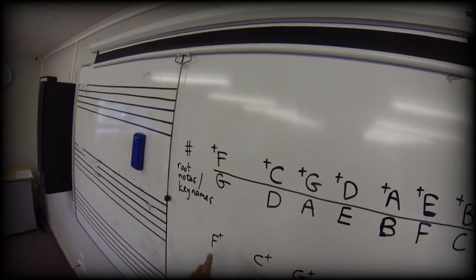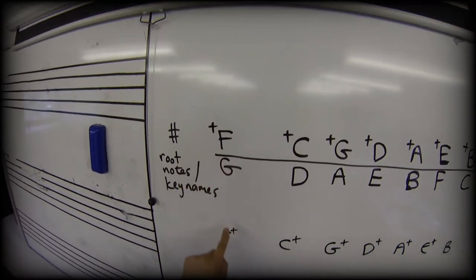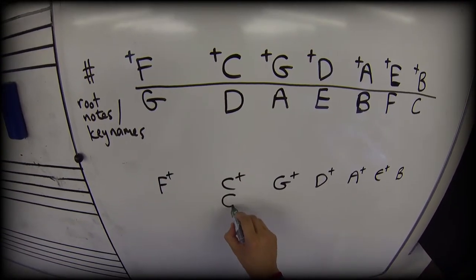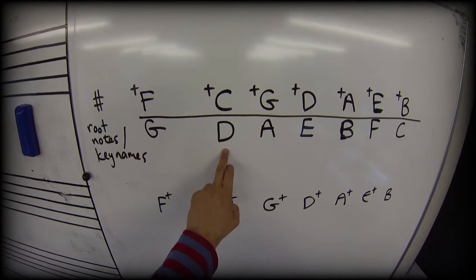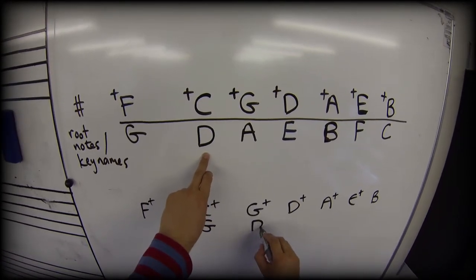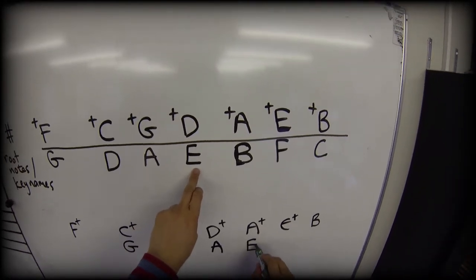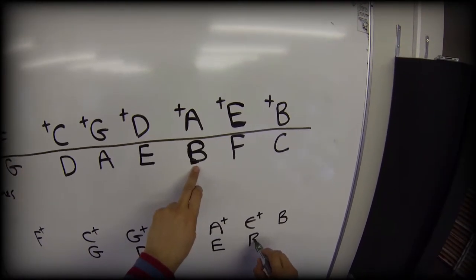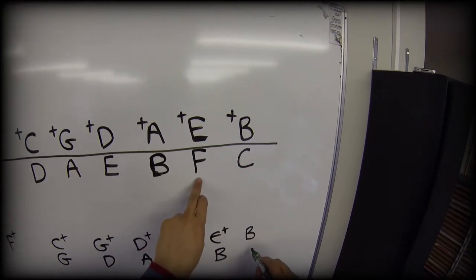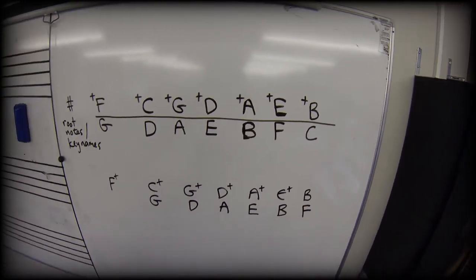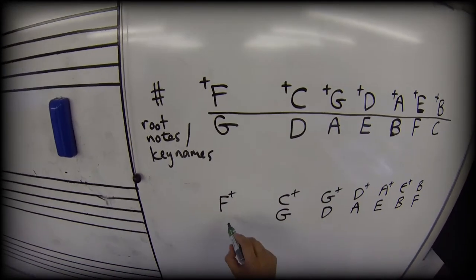And in order to get the correct root notes or key names, we need to just move this pattern over one position. So now the G is not under the F, the G is under the C. And then I just need to complete this pattern: so then the D comes, then the A, then the E, then the B, then the F, and finally I've got a C left over which is here.